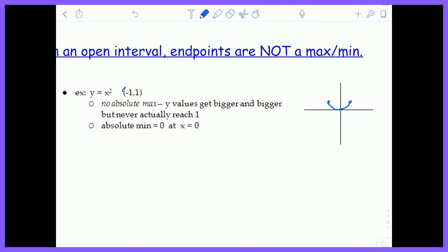Because we can never actually, because of these parentheses, we can never actually equal negative 1 or 1. So basically we're getting extraordinarily close to negative 1 and extraordinarily close to 1, but we're never going to reach that value. So our y values are getting bigger and bigger. So we don't actually have an absolute max there. This particular function at 0 has a minimum of 0. It's right here. So this function has an absolute minimum at x equals 0.